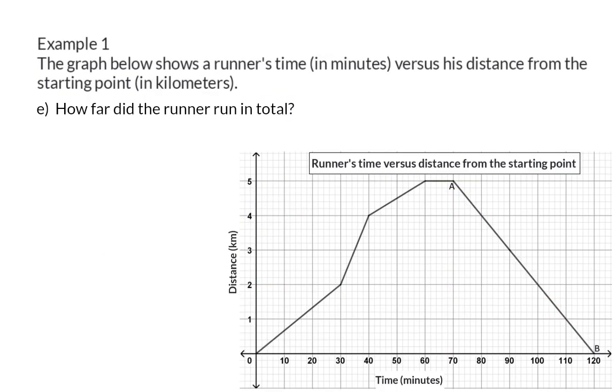Question E: How far did the runner run in total? This runner started and ran a distance of 5 kilometers from his starting point. Then, he turned around and went all the way back for another 5 kilometers, meaning that he ran 10 kilometers in total.